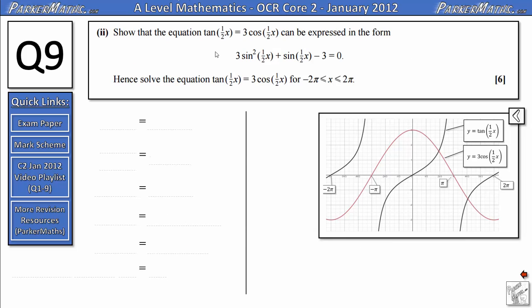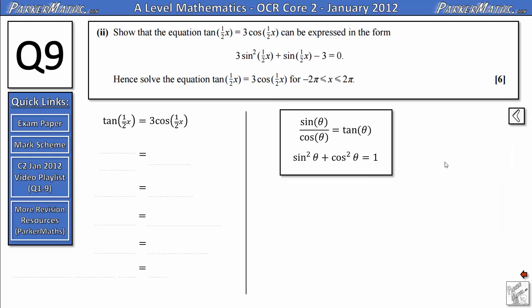In part 2, we need to show that the equation tan(x/2) = 3cos(x/2) can be expressed in the form 3sin²(x/2) + sin(x/2) - 3 = 0. So we'll start with tan(x/2) = 3cos(x/2) and think about how we can rewrite tan(x/2). You should know from your trig identities that tan(θ) is the same as sin(θ)/cos(θ). So we can write tan(x/2) as sin(x/2)/cos(x/2). We'll keep the 3cos(x/2) on the right side. Next, we'll remove the fraction by multiplying both sides by cos(x/2).